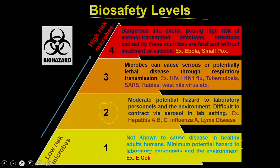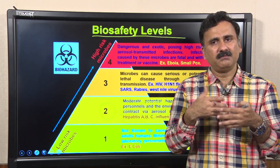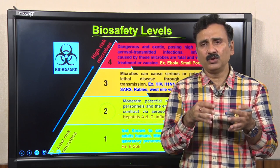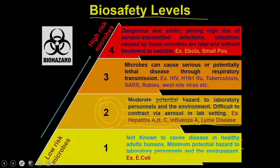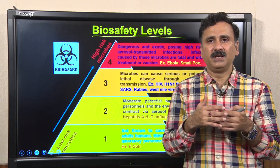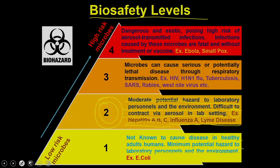BSL 2 organisms have moderate potential hazard to laboratory personnel and the environment and are difficult to contract via aerosol in a lab setting. Classical examples are hepatitis A, B, C, influenza, and Lyme disease. BSL 2 organisms may cause disease in some cases, but these diseases are not life-threatening and can be managed with medicines. Importantly, BSL 2 organisms are not airborne — you are exposed only through direct contact or spillage.